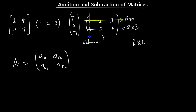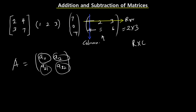Two rows, three columns. Each element is identified by its row and column position. So A11 belongs to row 1, column 1. A12 belongs to row 1, column 2. A21 belongs to row 2, column 1. And A22 belongs to row 2, column 2. So that's some basic housekeeping as regards the basic concepts of matrices.